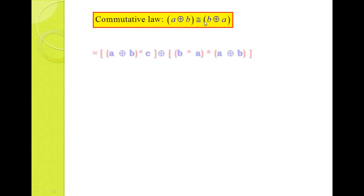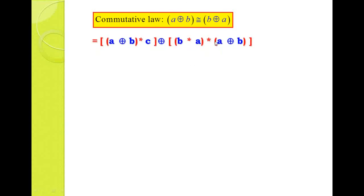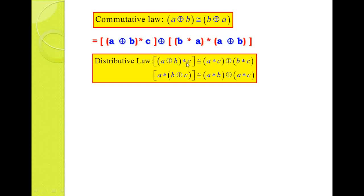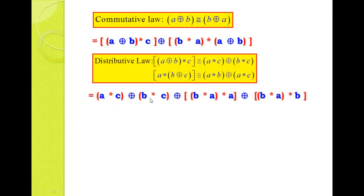Using commutative law we get B star A, star A plus B — just interchanging the term by using the previous equation. Next step: once again using distributive law. For the right-hand side distributive law and left-hand side distributive law — what is the right-hand side distributive law? A star (B star C) means we write (A star C) direct sum (B star C). Similarly, A star (B direct sum C) gives A star B direct sum A star C — this is the left-hand side distributive law. Coming to the first term using the first distributive law, we get (A star C) direct sum (B star C).